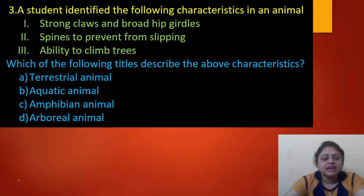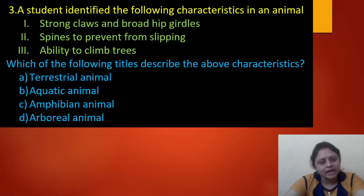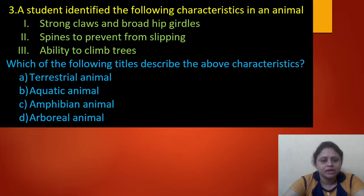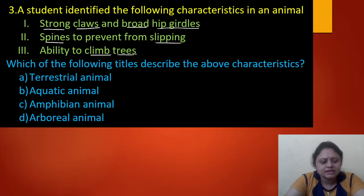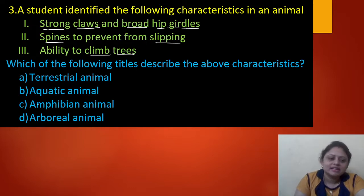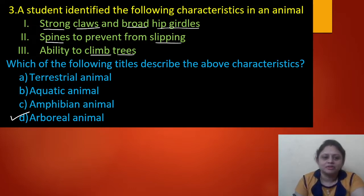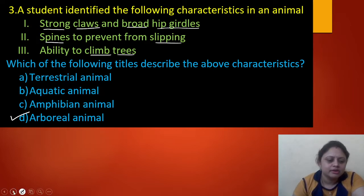Next question: a student identified the following characteristics in an animal — strong claws and broad hip girdles, spines to prevent from slipping, and ability to climb trees. Which of the following titles describes these characteristics? Option A: terrestrial animal. Option B: aquatic animal. Option C: amphibian animal. Option D: arboreal animal. Since the animal has the ability to climb trees, the correct answer is option D — arboreal animals.